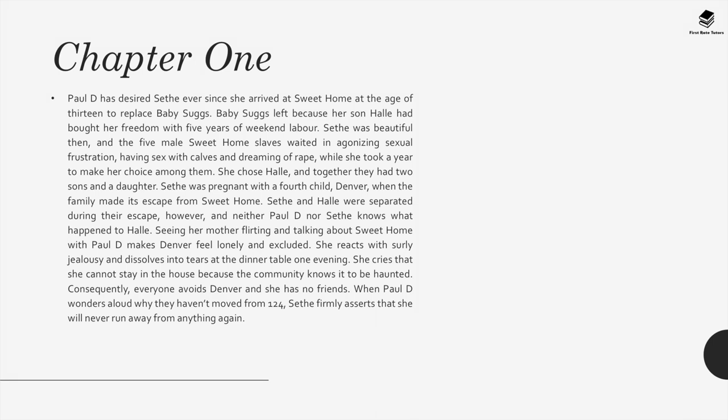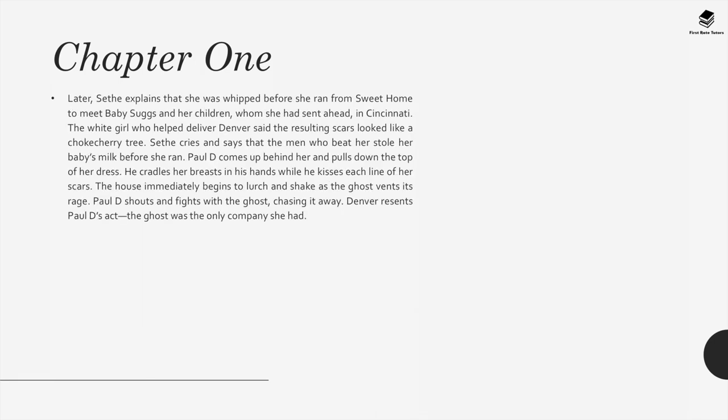Seeing her mother flirting and talking about Sweet Home with Paul D. makes Denver feel very lonely and excluded. She reacts with surly jealousy and cries at the dinner table, saying she cannot stay in the house because the community knows it to be haunted and everyone avoids her. When Paul D. wonders why they haven't moved from 124, Sethe firmly asserts she will never run away from anything again. Sethe explains that she was whipped before she ran from Sweet Home, and the white girl who helped deliver Denver said the resulting scars looked like a choked cherry tree. Paul D. comes up behind her, kisses her scars, and the house immediately begins to lurch and shake as the ghost vents its rage. Paul D. fights with the ghost, chasing it away. Denver resents Paul D.'s act — the ghost was the only company she had.